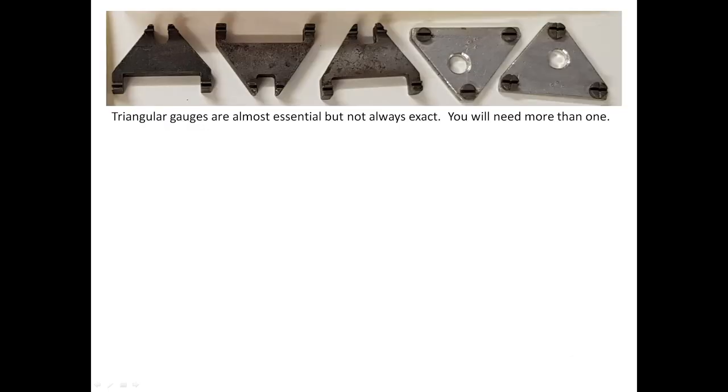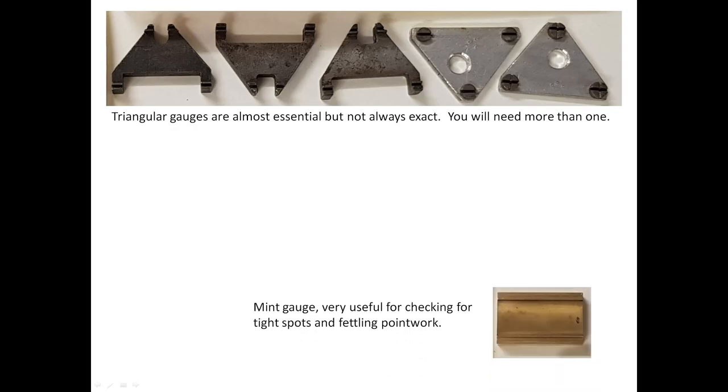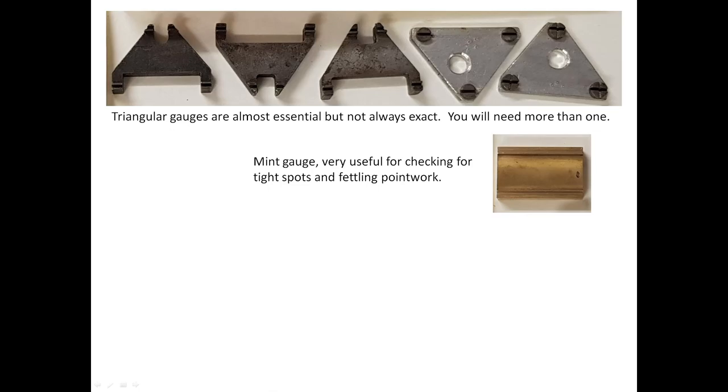As you can see, I have five triangular gauges which were purchased over the years. The three newer ones on the left are available from the Scale4 stores. My three are not identical. One of them has a firmer grip on the rail head than the other two. The mint gauge is very useful for checking track for gauge.